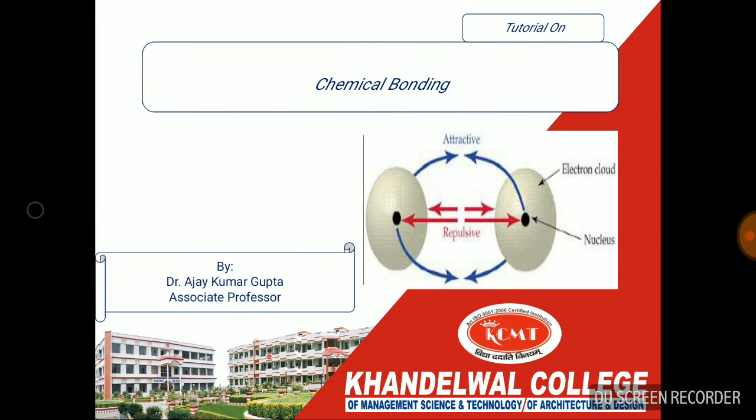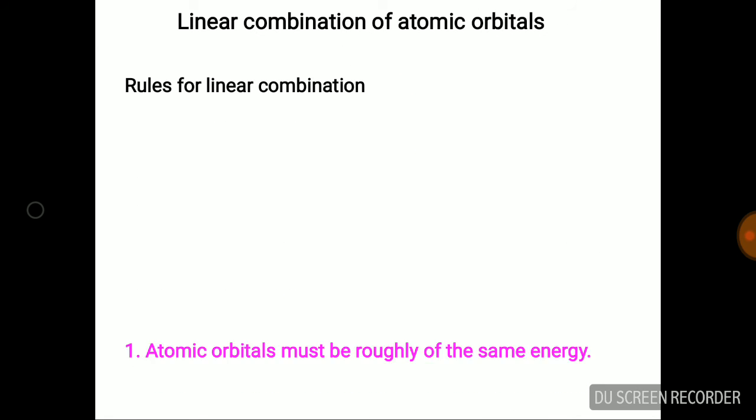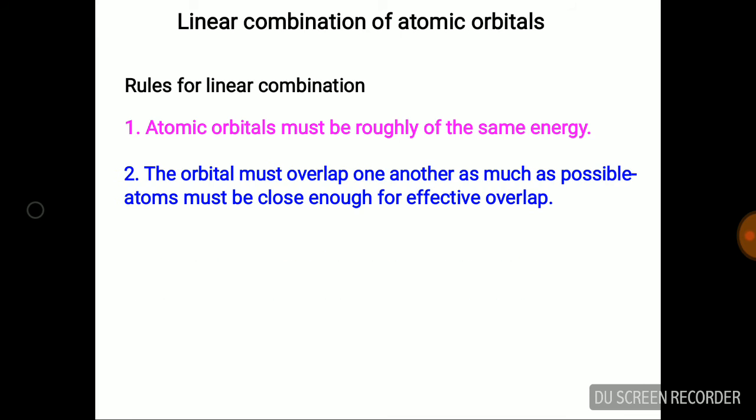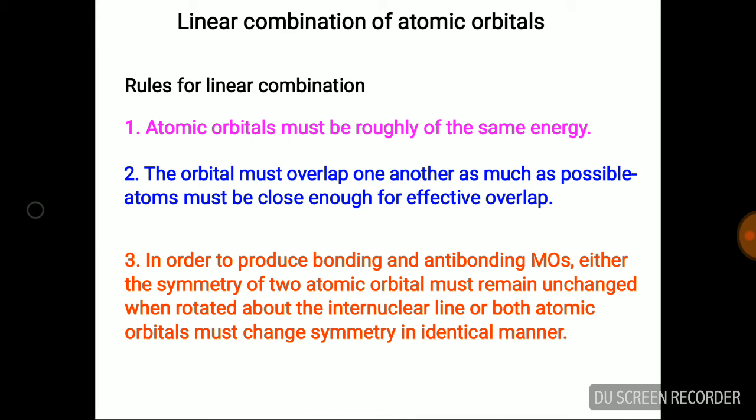Friends, today we are discussing chemical bonding and the formation of a chemical bond. In the formation of chemical bond, two atomic orbitals having same or approximately same energy combine with each other and form molecular orbitals.